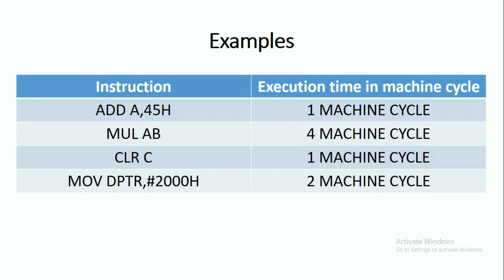And MUL AB, that is the multiplication of contents of A and B registers, which requires four machine cycles. And CLR C requires one machine cycle.